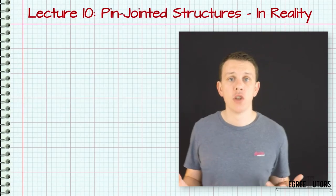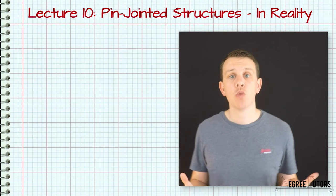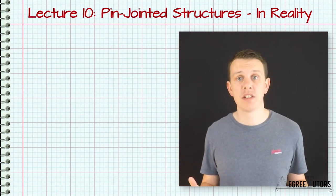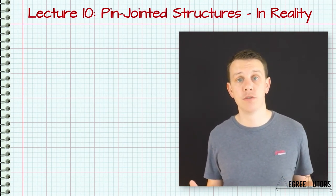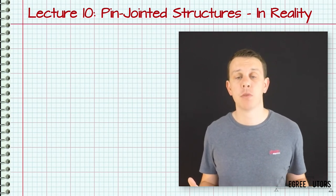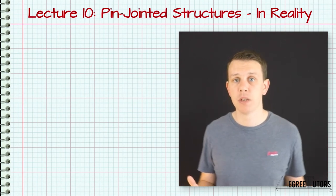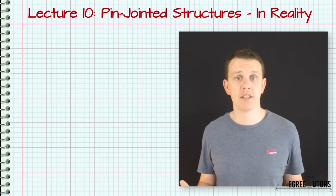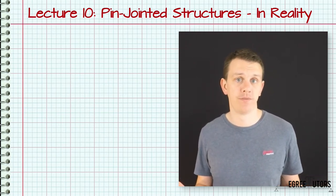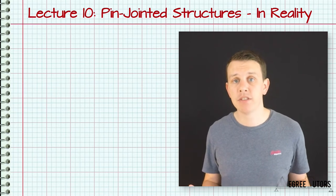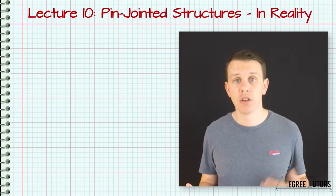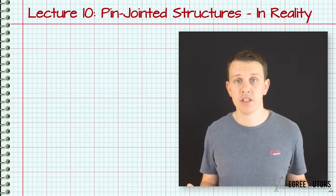In this lecture we'll discuss the ways in which real trusses deviate from our idealised models as well as identify some common uses of truss structures. Back when we were discussing beam supports we emphasised the differences between how the real support behaves and how our idealised model of that support will behave. We need to be aware of the same differences when it comes to pin jointed trusses, and in this lecture we're going to discuss those differences in more detail.